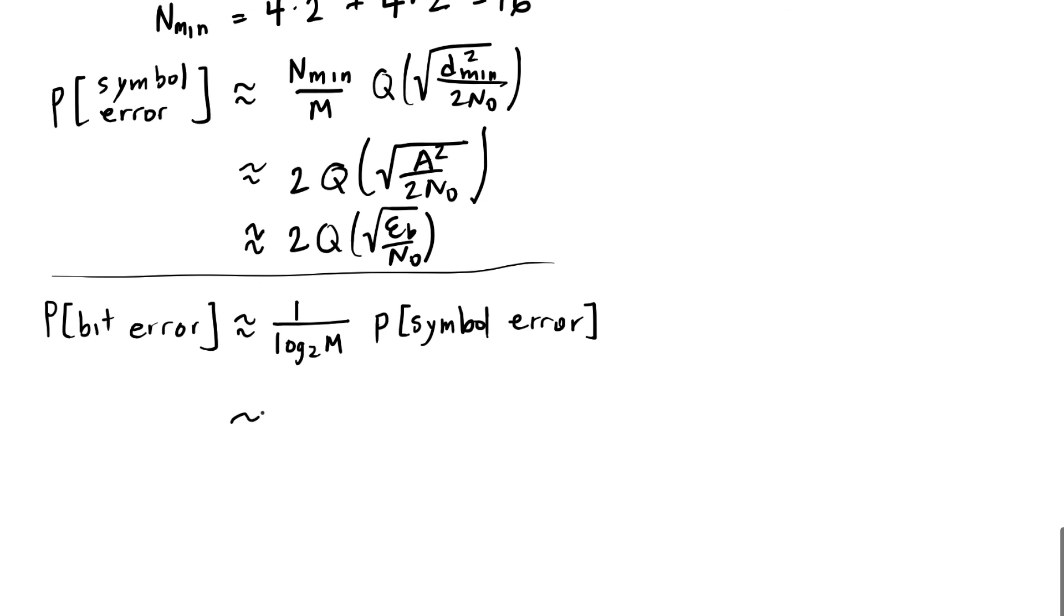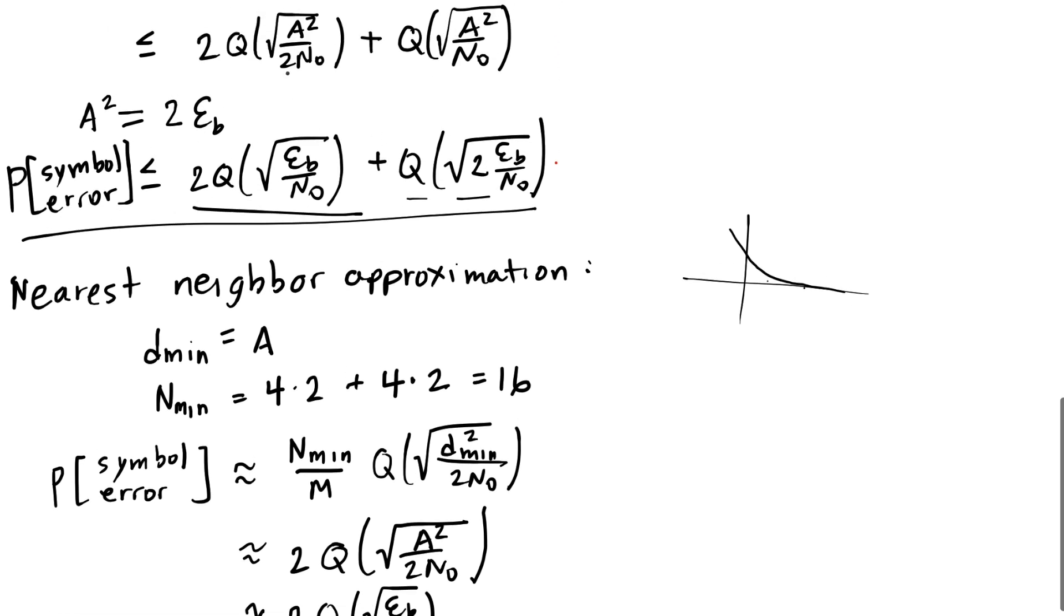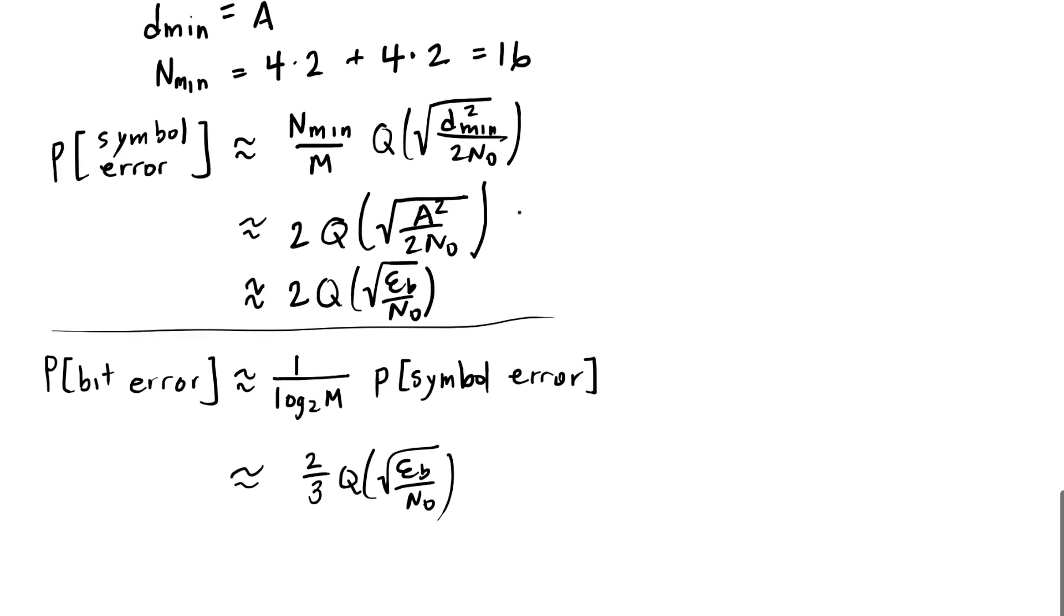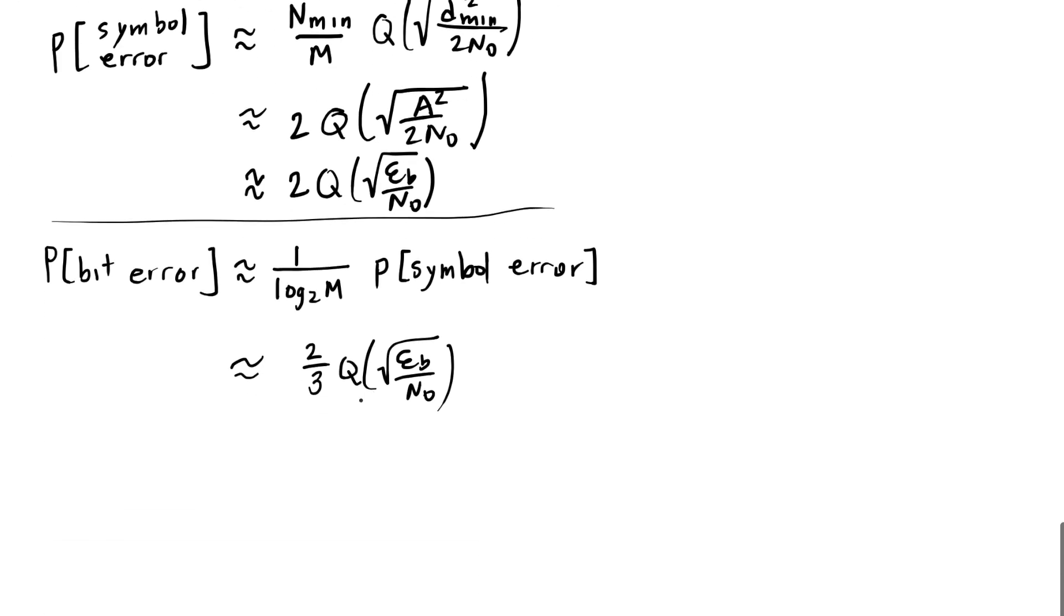So the probability of bit error for the nearest neighbor approximation, for example, would be one-third times this 2Q function. So we'd have 2 over 3 times the Q function of the square root of Eb over n0. And in the union bound expression, we'd have the two-thirds of the first Q function and one-third of the second Q function as our approximate probability of bit error.